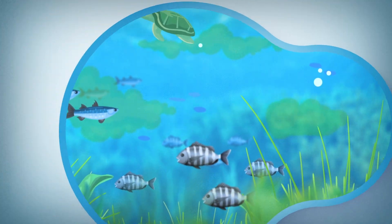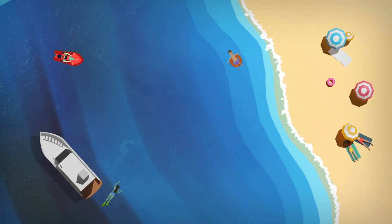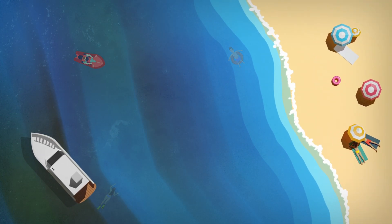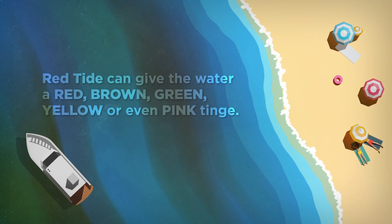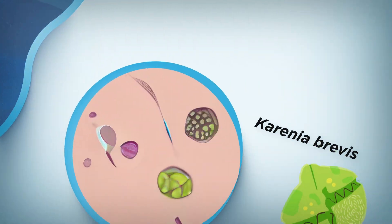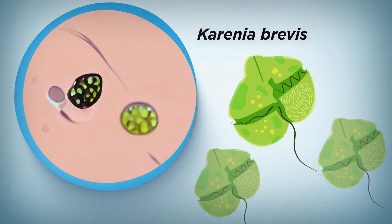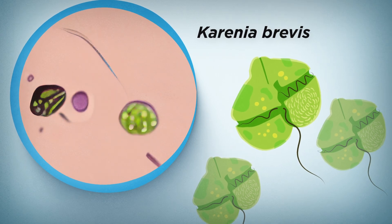But there are some microscopic algae commonly referred to as red tide, and when they reach high concentrations can cause harmful algal blooms that give the water a red, brown, green, yellow, or even pink tinge. In Florida, red tide refers to blooms of a species commonly observed in the Gulf of Mexico called Karenia brevis.